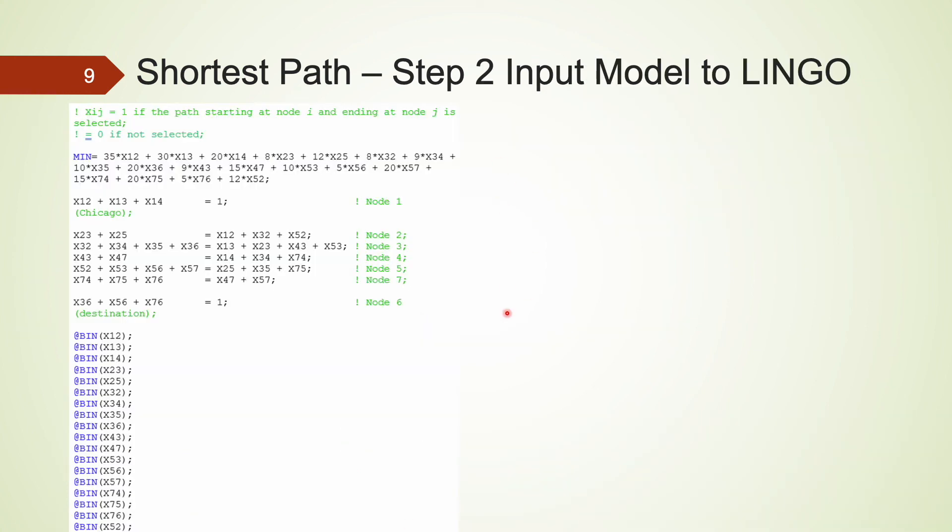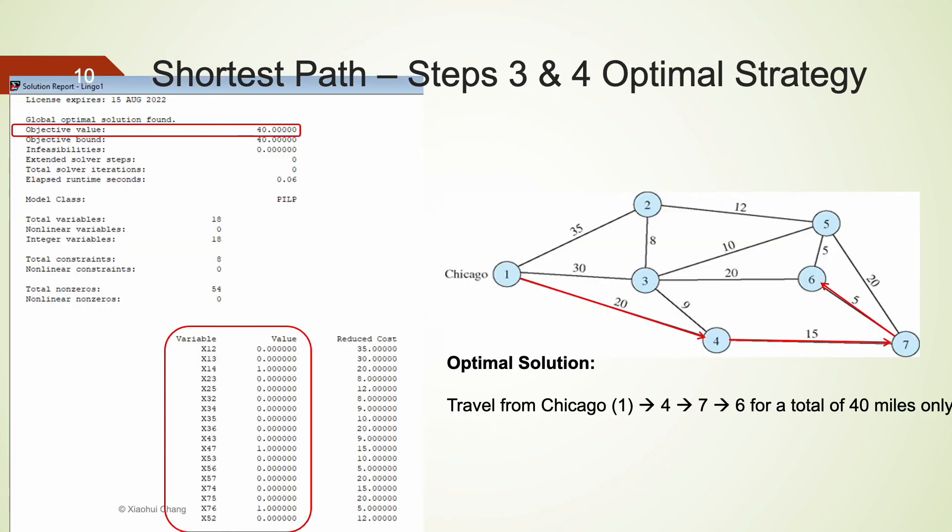Here is the complete lingo model. The optimal solution for this trucking company is to travel from Chicago to node 4, to node 7, and then to node 6. This path takes the shortest distance among all at only 40 miles traveling in total.